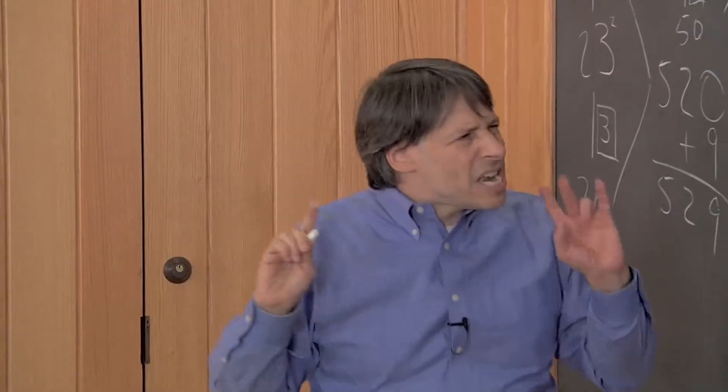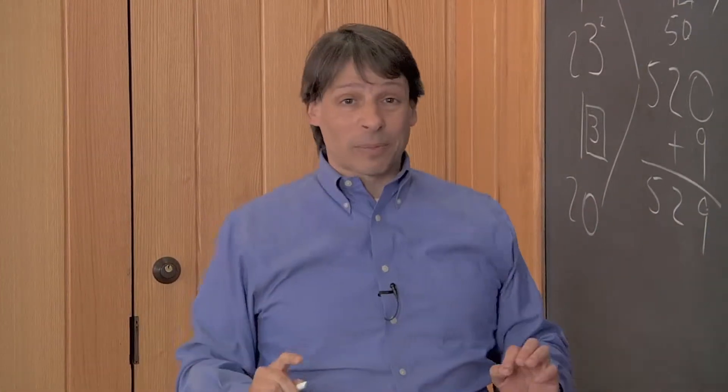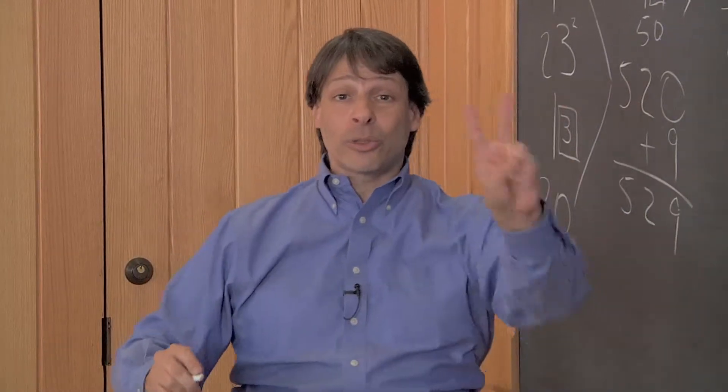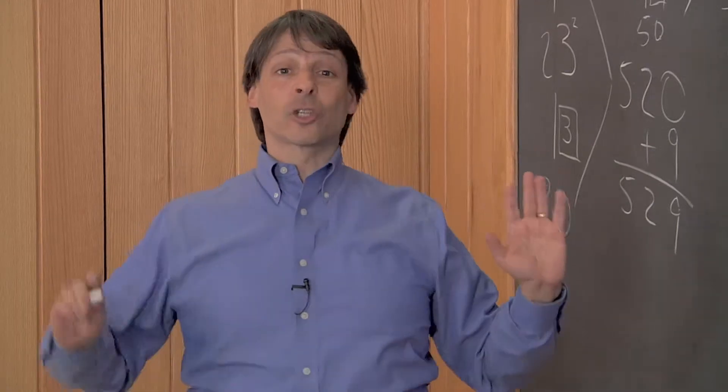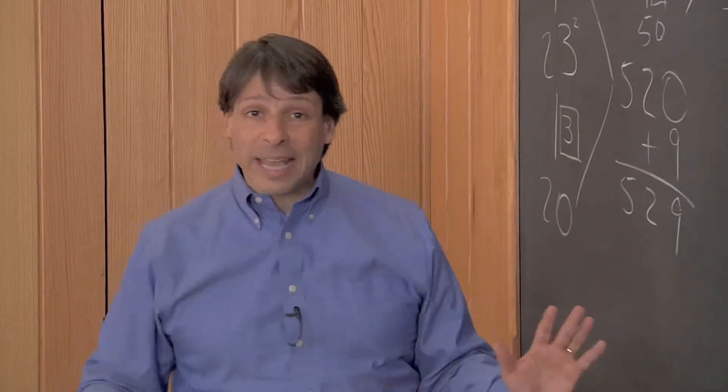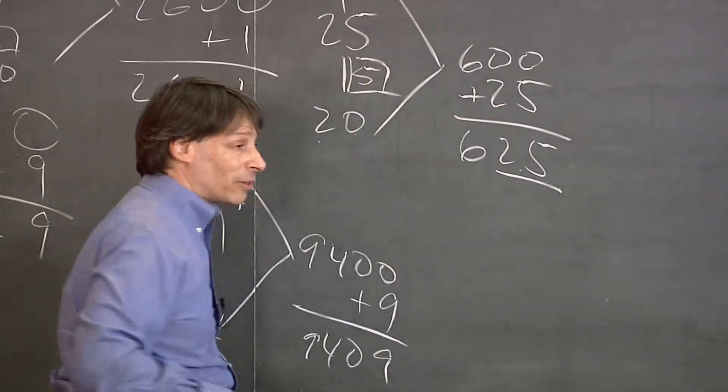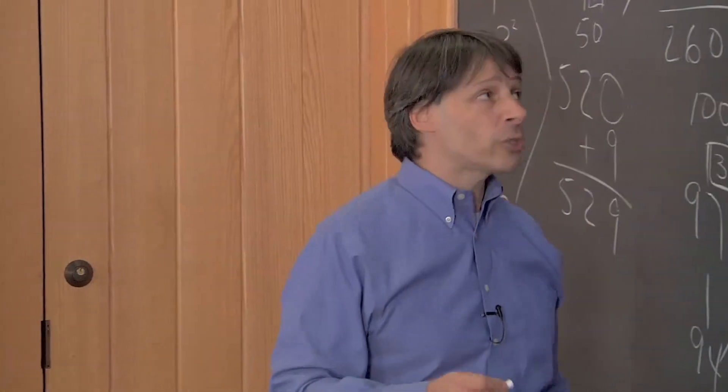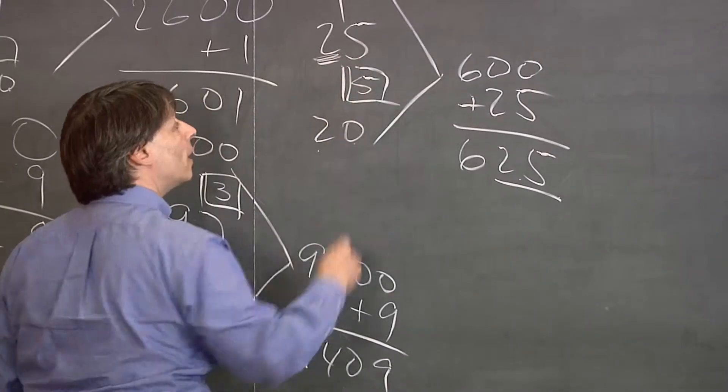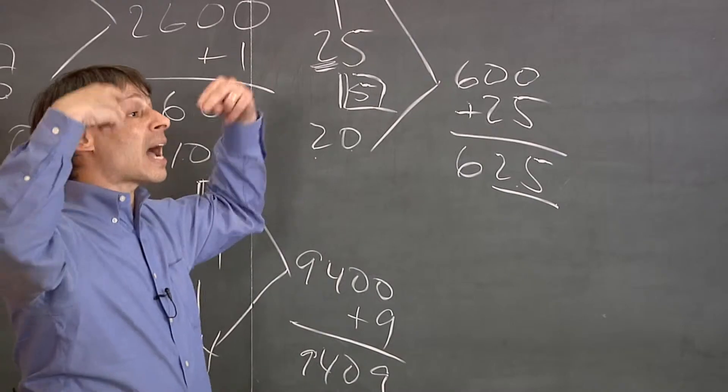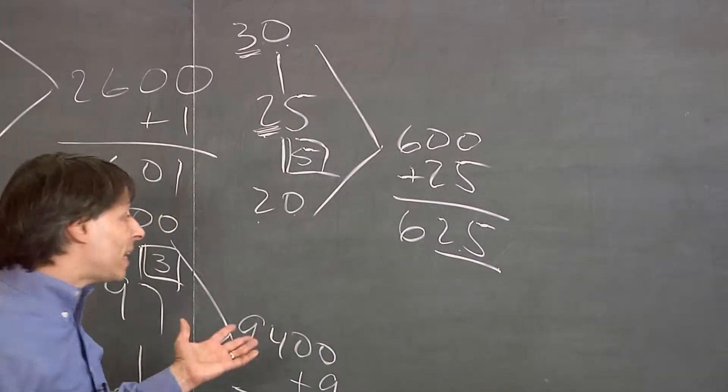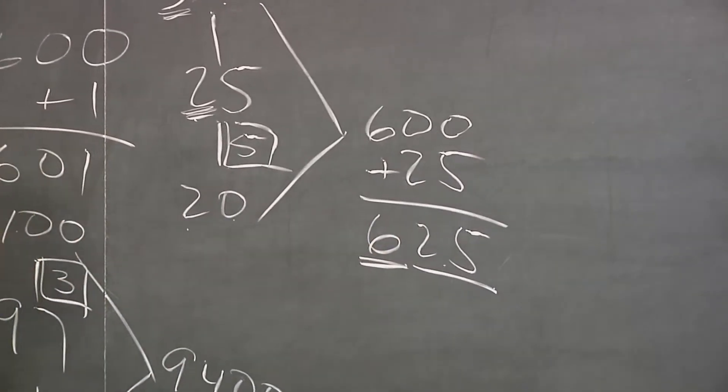By the way, there's another way of doing these problems that end in 5 that you might find even easier still. If you square a number that ends in 5, there's only two things you need to know. First of all, the answer will always end in 25, just like here. Also, how does the answer begin? It begins by taking the first digit, which is 2, multiplying that by the next higher digit, which is 3. 2 times 3 is 6, and that's your answer, 625.